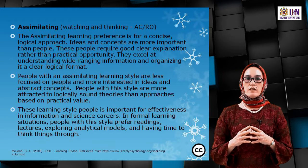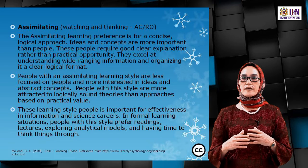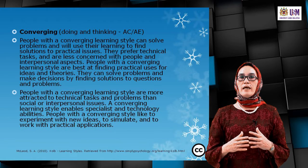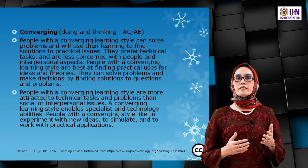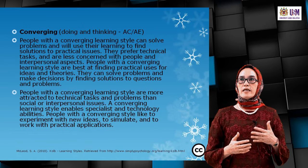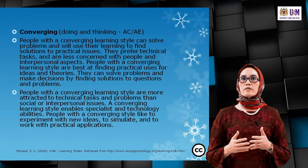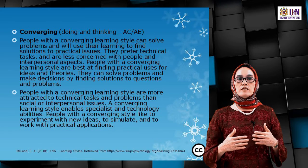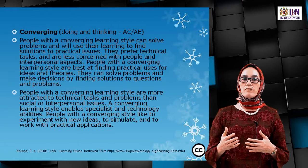Assimilating learning styles are important for effectiveness in information and science careers. Converging (doing and thinking): people with converging styles can solve problems and find solutions to practical issues. They prefer technical tasks and are less concerned with interpersonal aspects. They are best at finding practical uses for ideas and theories, make decisions by finding solutions to questions and problems, and like to experiment with new ideas, simulate, and work with practical applications.